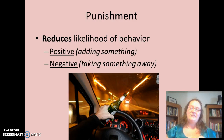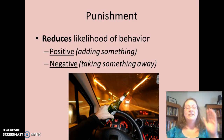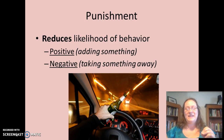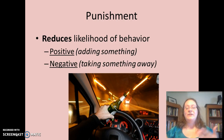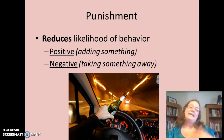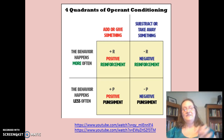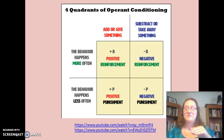Punishment always reduces the likelihood of behavior. You can have positive punishment, where you add something to reduce the likelihood of behavior — such as adding prison time to reduce drunk driving. Or you can take something away, like revoking someone's driver's license to reduce drunk driving behavior. This quadrant diagram shows how reinforcement and punishment combined with positive and negative make four boxes, helping you conceptualize these together.